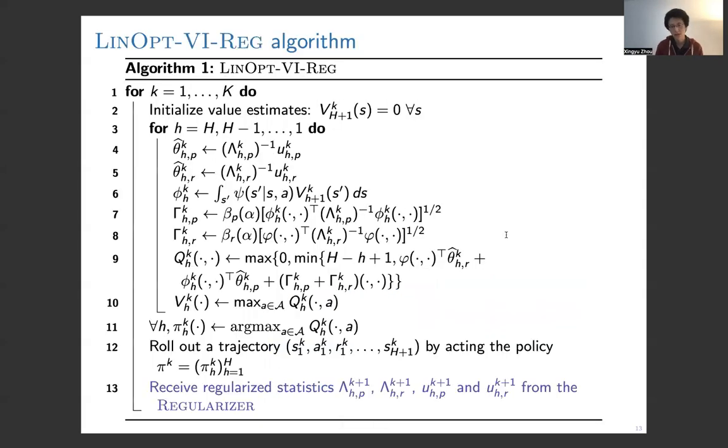Here is the complete algorithm. There is only one change, line 13. We will receive regularized statistics from the regularizer. The basic idea of the algorithm is quite simple. We first estimate the unknown parameter, we construct some UCB terms, and we use this kind of balance term to do value iteration, we construct a policy, and we choose a greedy policy.